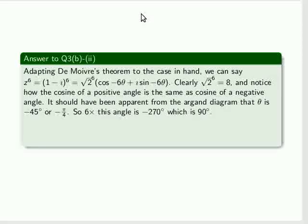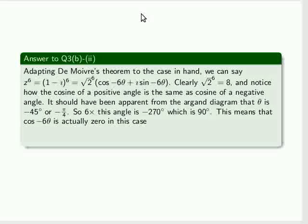Now 6 times this angle is minus 270 degrees, which actually comes around to 90 degrees. This means that cosine of minus 6θ, the cosine of 90 degrees,